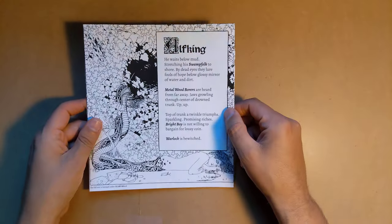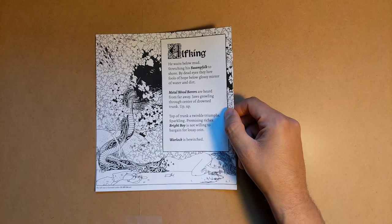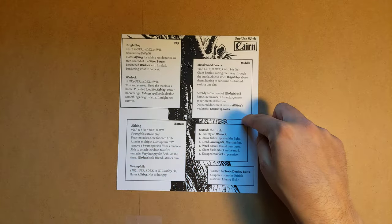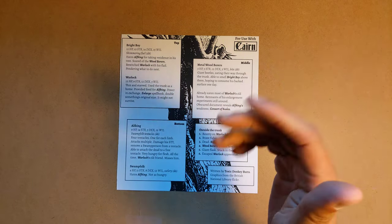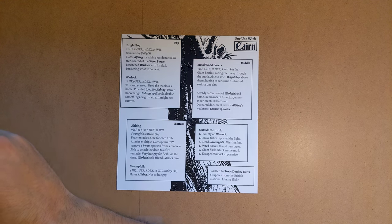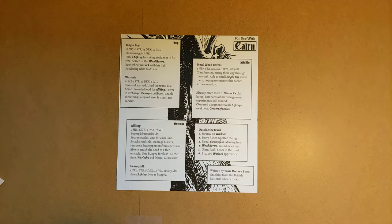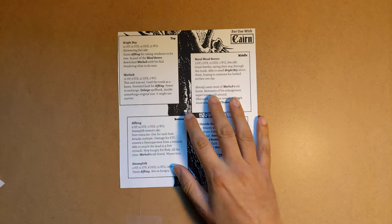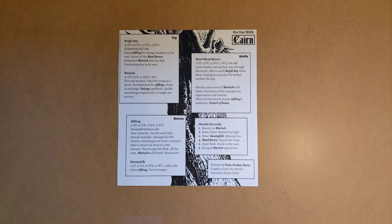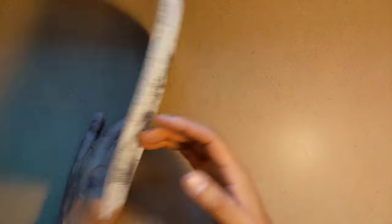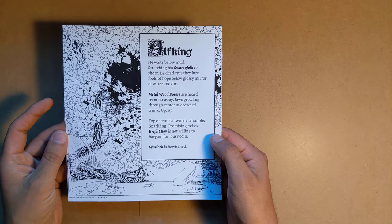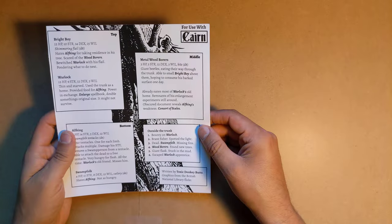Next is Alfking, which is an English translation of a Danish supplement for Cairn. It's by Lasse Borli, also known as Toxic Donkey Buck, who did the Cairn Danish translation. And it's for generating emergent results, is my understanding.